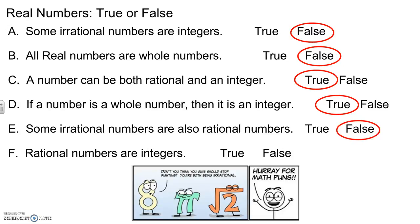Some irrational numbers are also rational numbers. False, tried to trick you there. Irrational and rational are two separate categories. Rational numbers are integers. False, not all rational numbers are integers when they're simplified. So I'll leave you with the last little math pun here. Do you think you guys should stop fighting for both being irrational? See you next time.